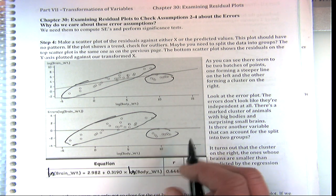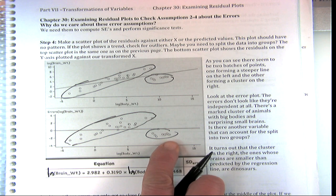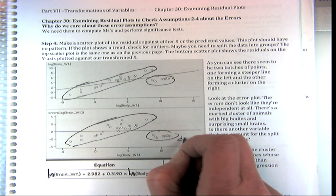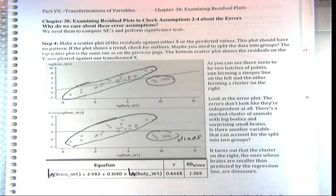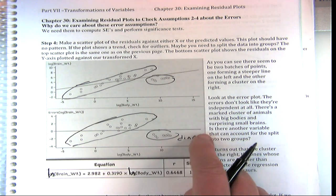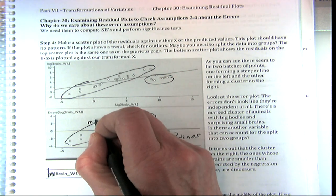Dinosaurs — yes. These are the dinos. So we could include dinos in our regression as another independent variable, and these right here are the mammals.